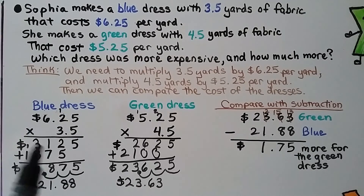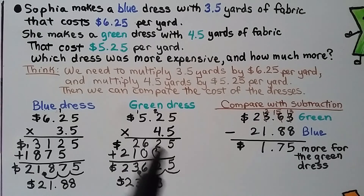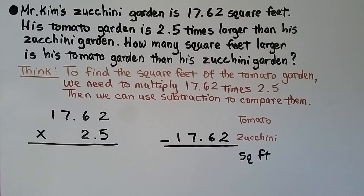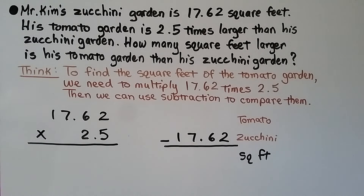We had to do multiplication for two different equations, round the pennies because it's a money amount, then use subtraction to find out how much more. Mr. Kim's zucchini garden is 17 and 62 hundredths square feet. His tomato garden is 2 and 5 tenths times larger than his zucchini garden. How many square feet larger is his tomato garden than his zucchini garden? We need to multiply 17.62 times 2.5, then use subtraction to compare them.